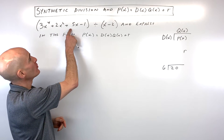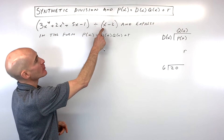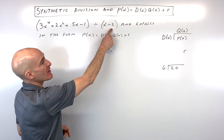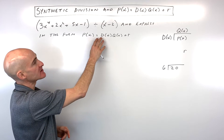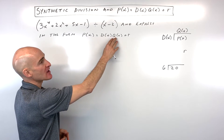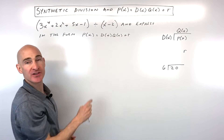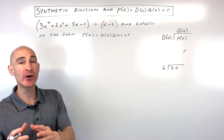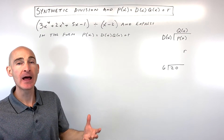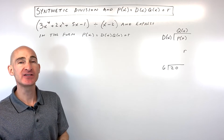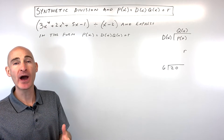What we're going to do is take this polynomial and divide it by x minus 2, and write it as the divisor times the quotient plus the remainder. I want to show you a method to help you remember how to set this up and understand why it works.